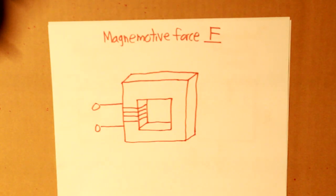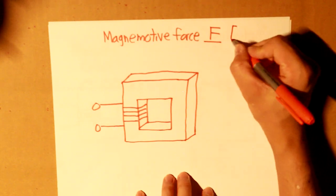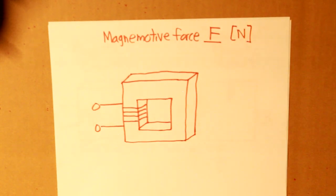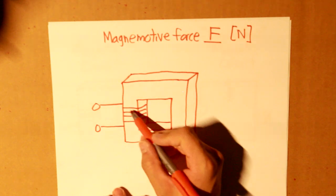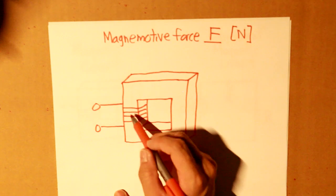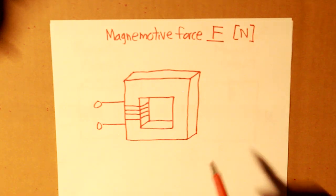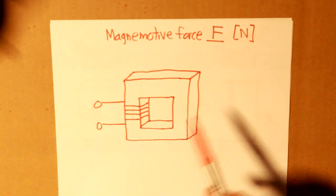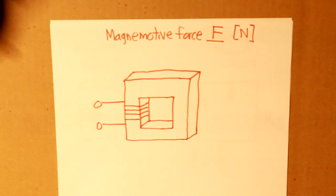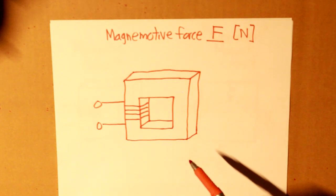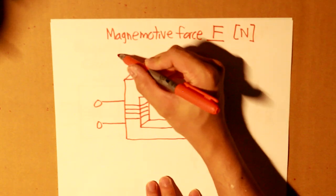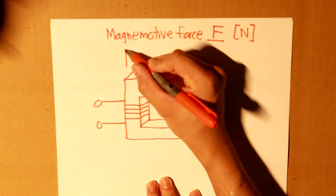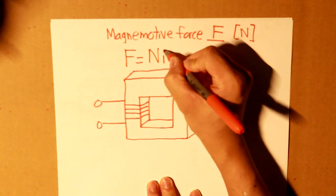F is the magnetomotive force in Newtons. That force is created by the current that is flowing through this coil. Now, what that means is that that current that is flowing through the coil, each turn creates a certain force. And the more turns it creates, the greater the magnetomotive force is. Therefore, F is equal to N times I,